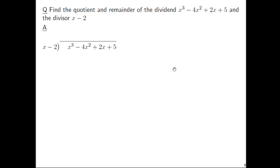We're going to set up long division in the same way. Take a look at x cubed versus x — just look at the first term here: x cubed and x. Something times x is x cubed. Don't look at the minus 2; we'll worry about that a little bit later. Something times x is x cubed, and that should be x squared.